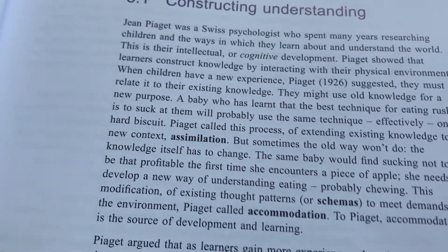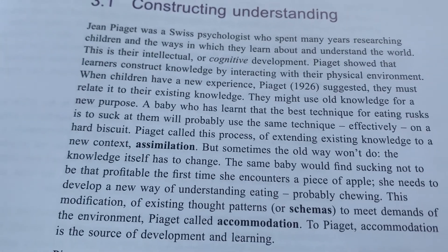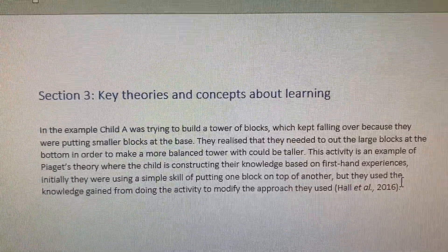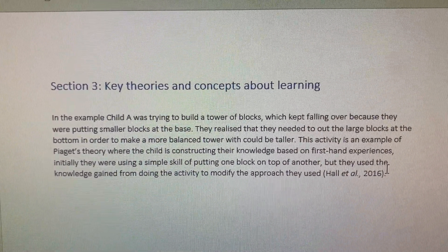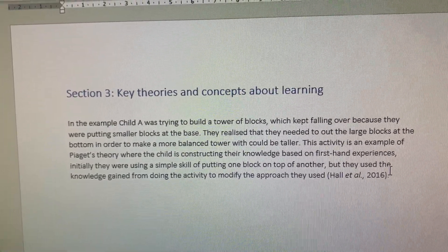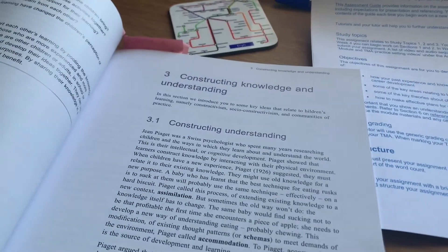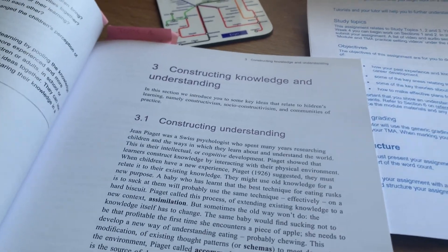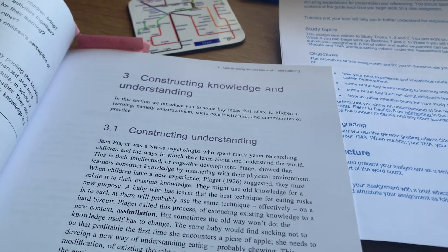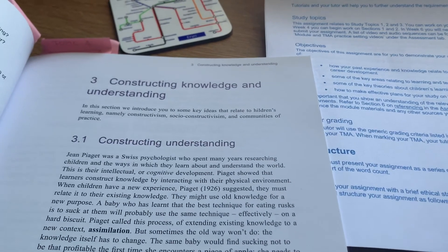I've put that in my own words, saying that the child has constructed their knowledge based on the experiences they were having and then changing that information. So you can see I've read the information that was in the book — that's where I found it — and I've put it in my own words. What I need to do now is say where I found that information about Piaget. That's what referencing is.